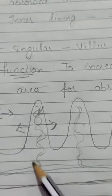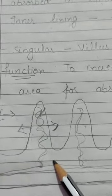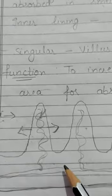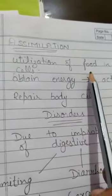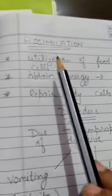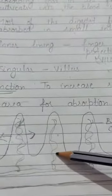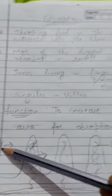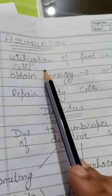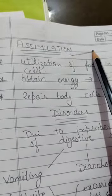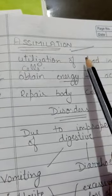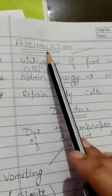When each and every part of the body gets proper nutrients, they get full energy. That energy helps to do so many kinds of activities — that is known as assimilation. Assimilation means the utilization of food in the cells. Whenever the digested food is properly absorbed with the help of villi, there is utilization of the food in the cells to produce energy — that is known as assimilation.